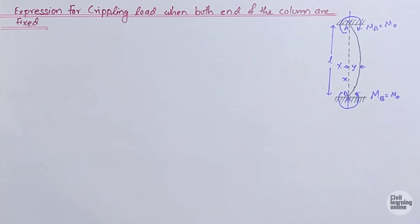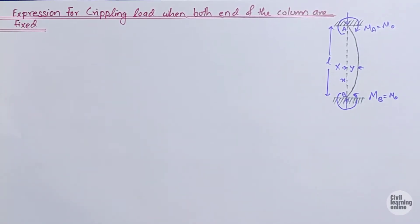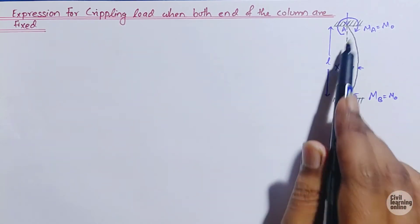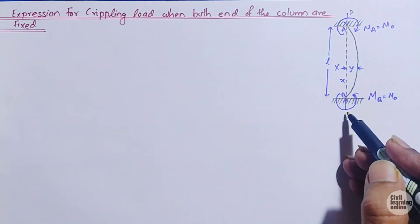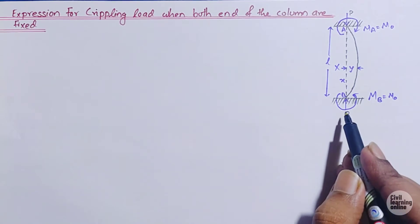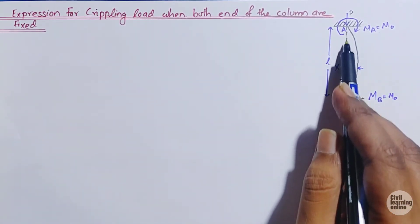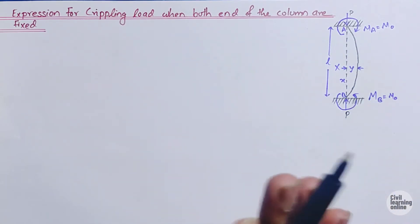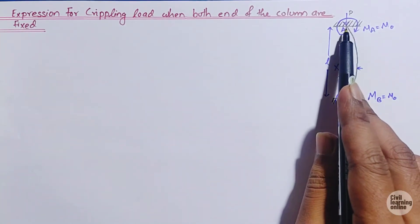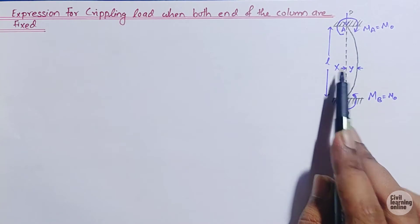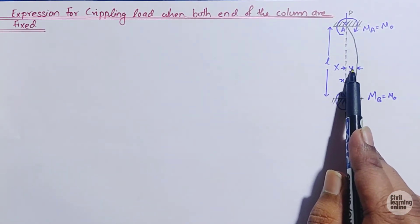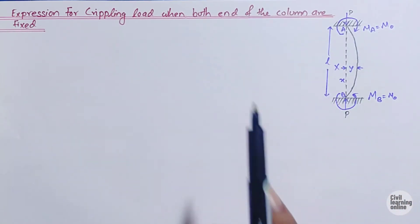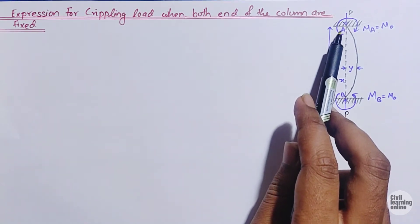Let me take you through the diagram first. We have a column which is fixed at both ends. Due to load P acting from the top, and a similar magnitude of load P acting from the bottom, the column buckles. AB is the original section, and the curve you see is the buckled section due to load P. The crippling load is that load at which buckling or displacement of the column takes place. At section X — at distance X from end B — the column is displaced from its original position by value Y.